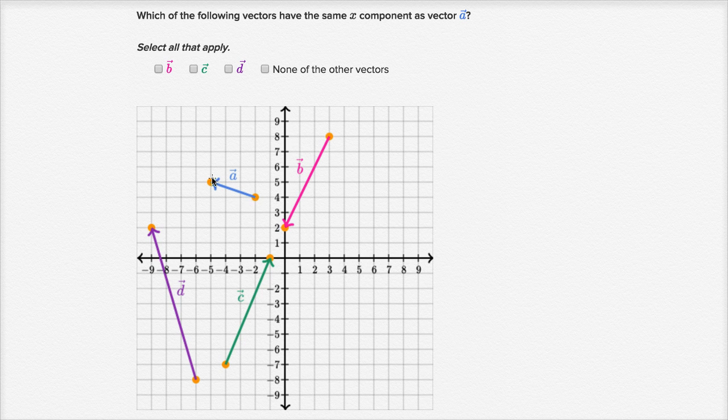So this is vector a right over here, and we only have to concern ourselves with the x component. That's what they're asking us about. So let's think about what its x component is. We're starting at this point right over here, which has an x value of negative two, and we're going from negative two to, or we're going from x equals negative two to x is equal to negative five.